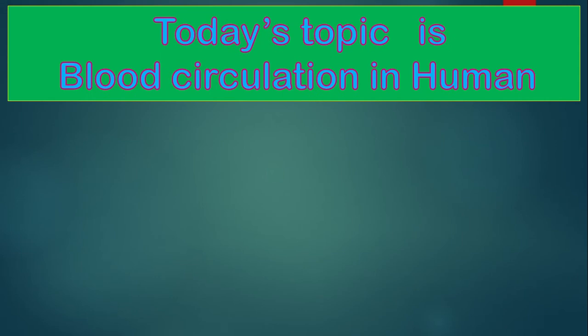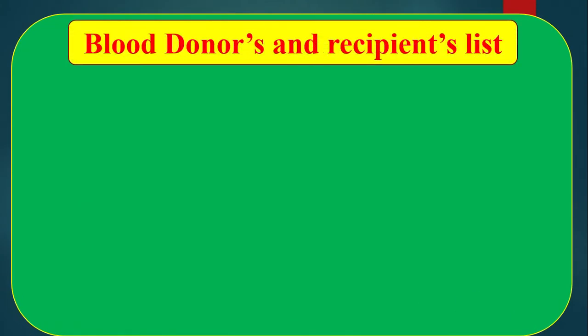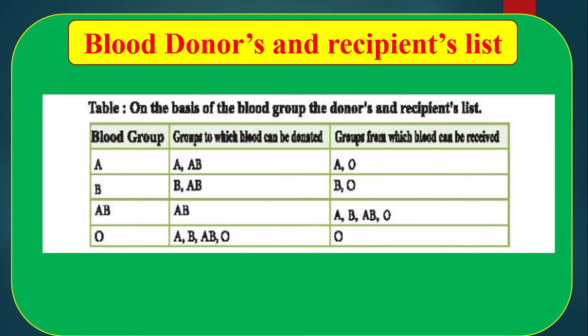Today's topic is blood circulation in human — blood donors and recipient list. There is a table; follow the table on the basis of blood group. The table shows the name of blood group, the groups to which blood can be donated, and the groups from which blood can be received. Blood group A can donate to blood group A and AB, and receive from blood group A and O. Blood group B can donate to blood group B and AB.